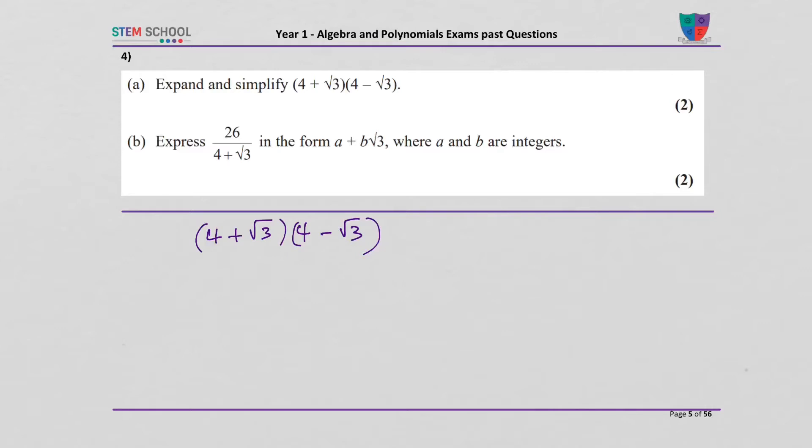Difference of two squares which says that a squared minus b squared equals a plus b times a minus b. That's what this question looks like and that is 4 squared minus root of 3 squared where a is 4 and b is root 3. And that would give me 16 minus 3 and that is 13.